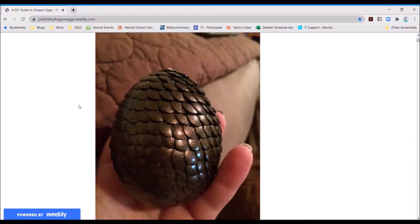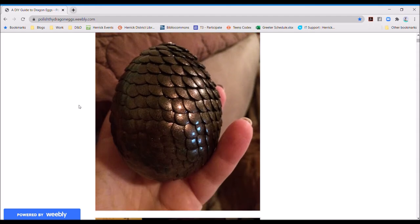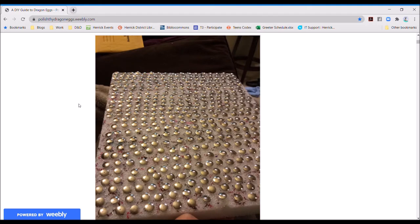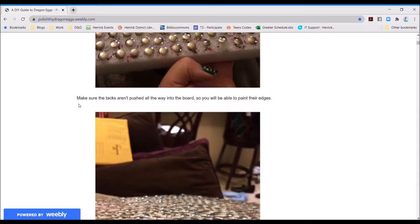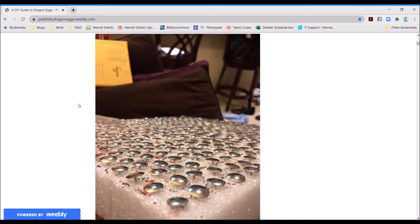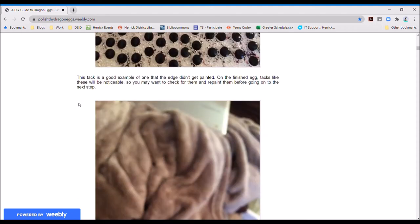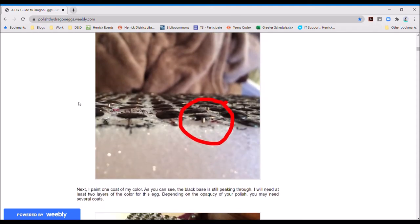Okay, now that we've got all our supplies, they put all of their thumbtacks in a styrofoam piece. I don't have a styrofoam piece, so that's why I'm using the cardboard. It looks like they got it close to the edge, so you can paint it really easily. Cool! All right, let's get started.